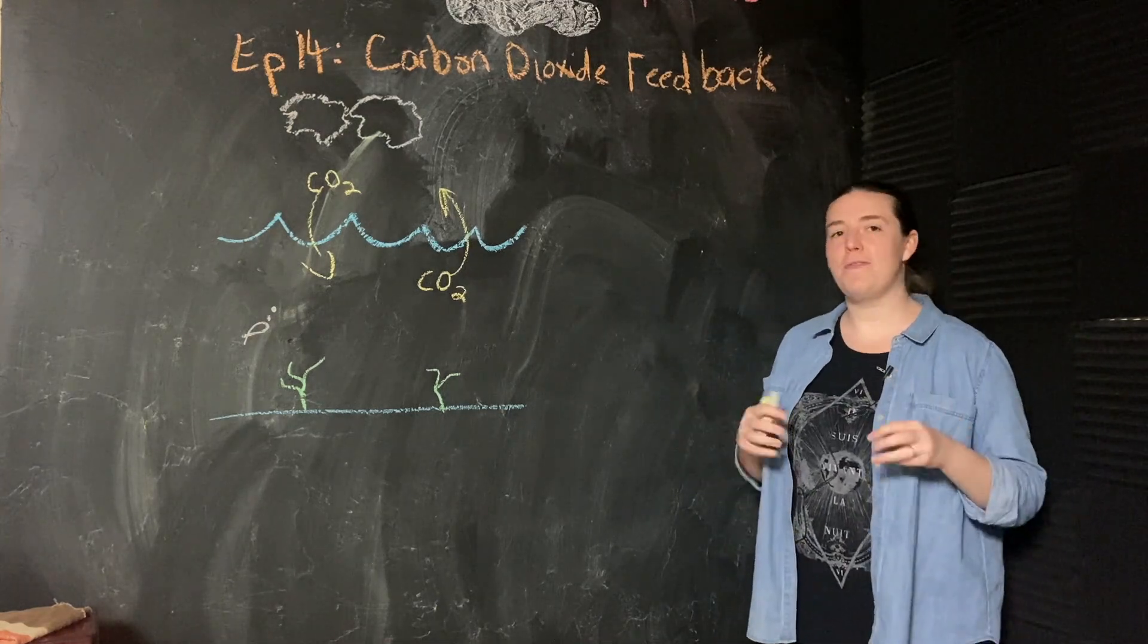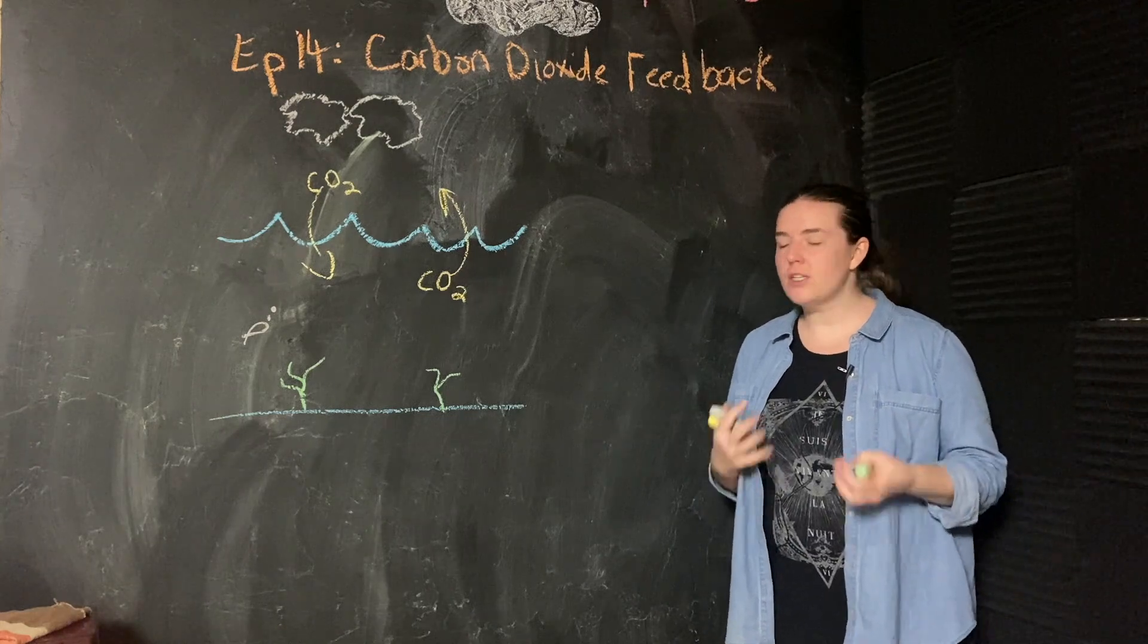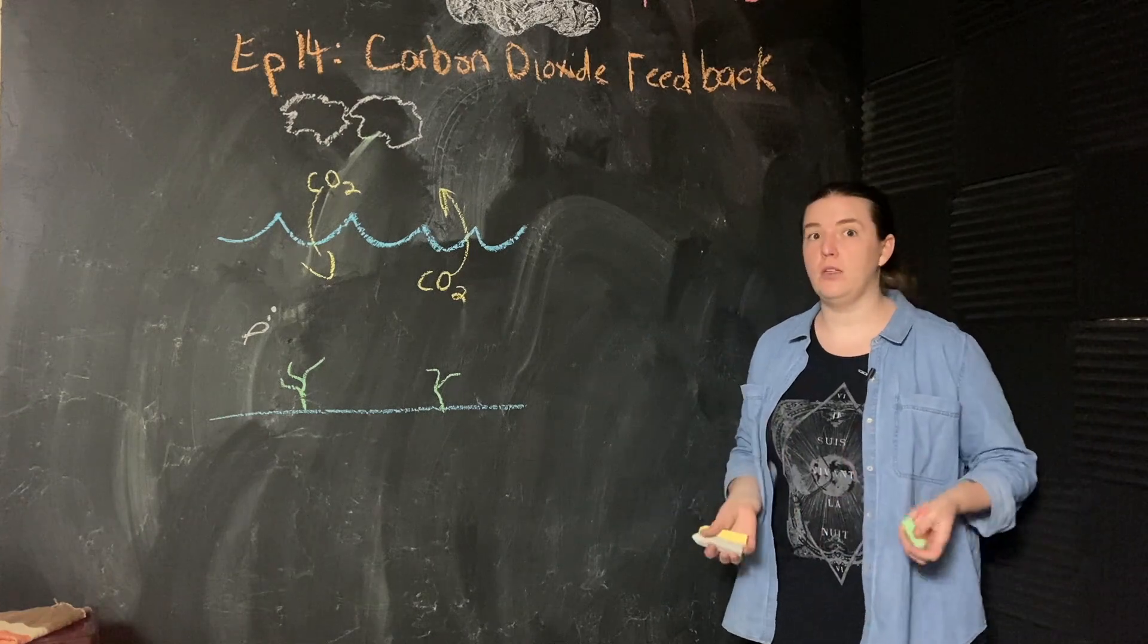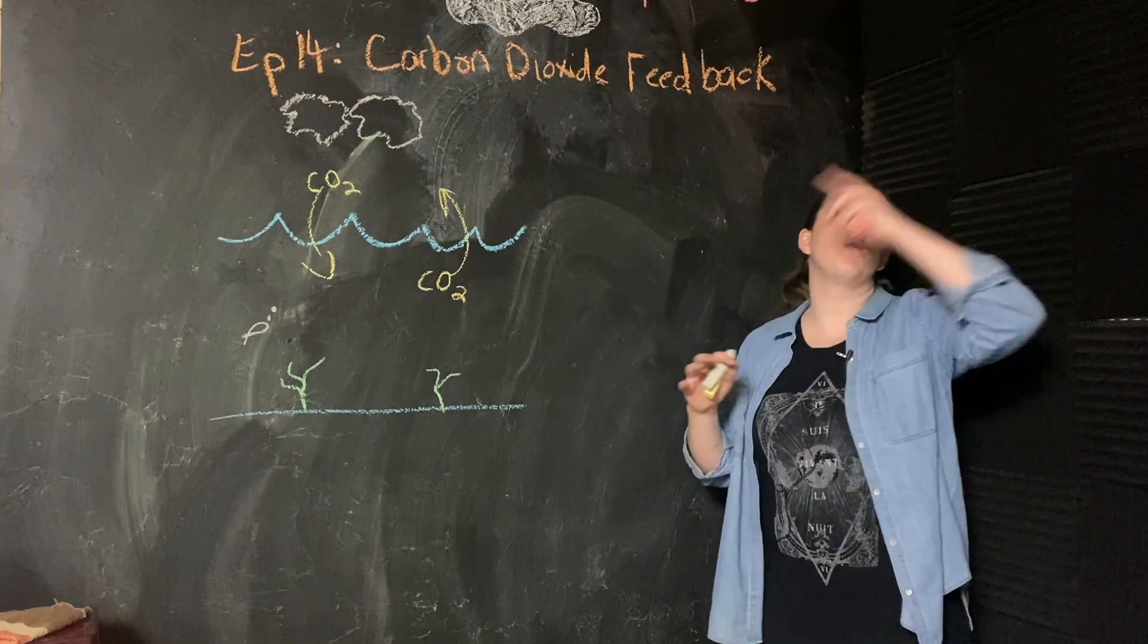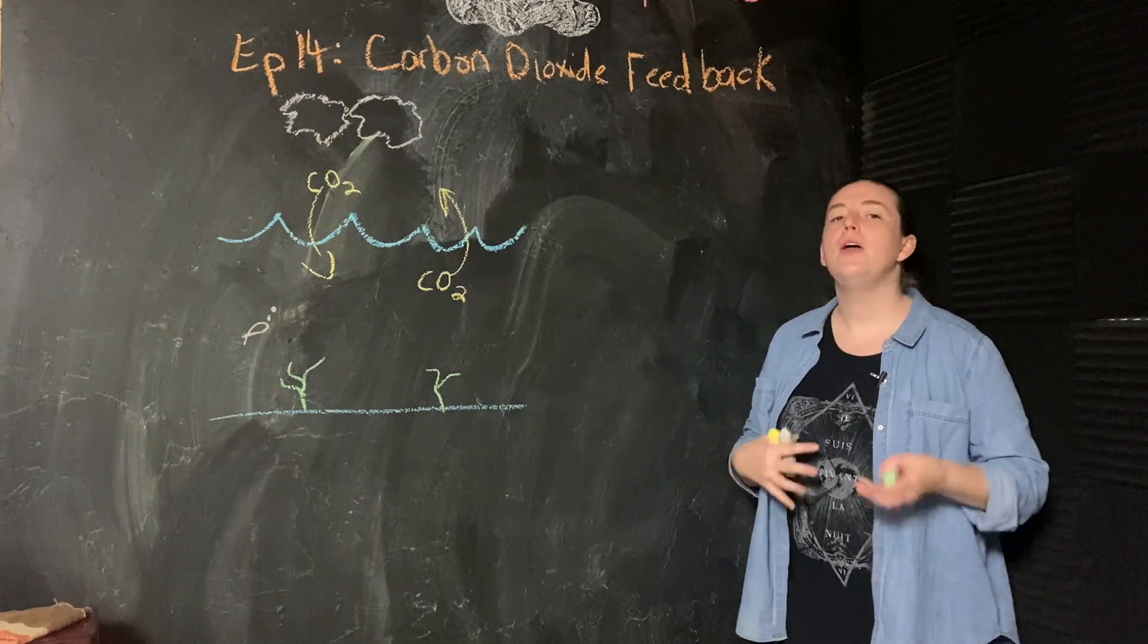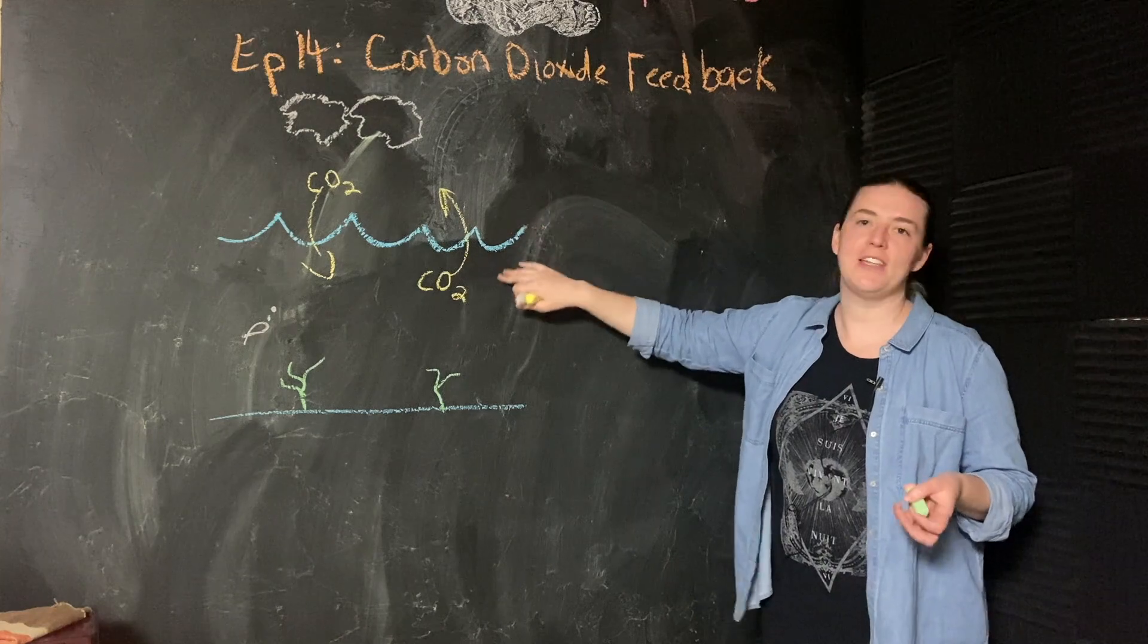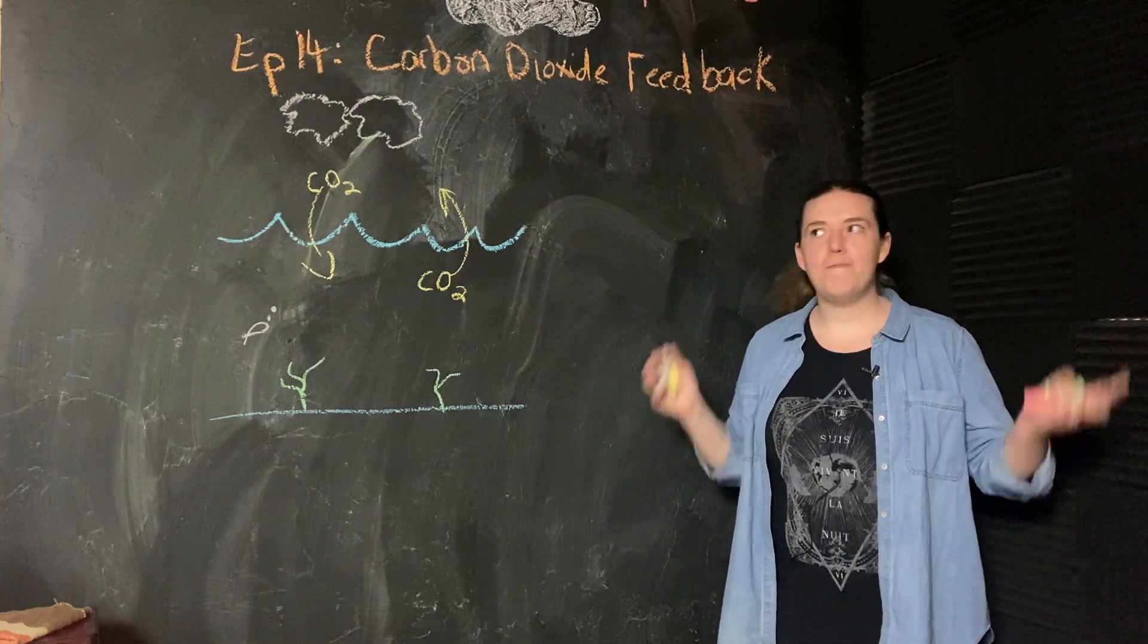Now that we understand ocean uptake of carbon dioxide, and I'll note that this is specifically in the surface layer of the ocean. Once carbon dioxide makes it into the deep ocean, a carbon can stay in the deep ocean for a really long time. It's a net carbon sink in the overall carbon cycle. But for climate, we're pretty interested in this surface interaction. So let's jump on to our feedback loop.